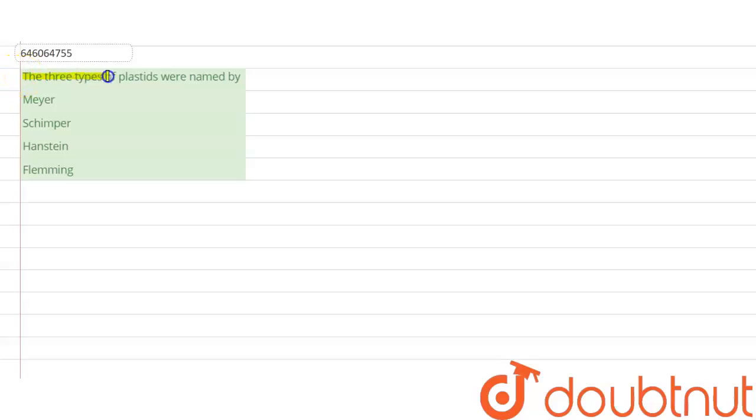The three types of plastids were named by: option one, Meyer; option two, Schimper; option three, Hanstein; and option four, Flemming. All right, so first of all, what are plastids? So basically, plastids are cell organelles.